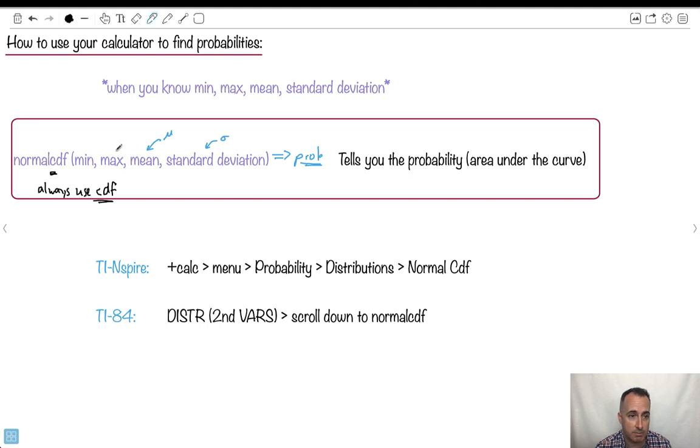But you get to it in the same place where we got the binomial distributions. We go to probability and distributions and normal CDF, or we go to distributions and scroll down to find it. But that's it. You just got to know the minimum and the maximum. Basically, where do you want to start finding the area? Because if you have some sort of area like this, you have to know where you want to start and where you want to finish.